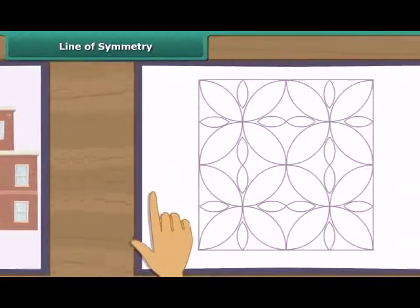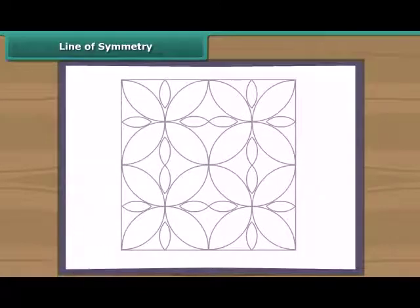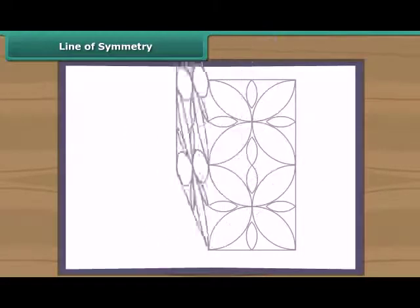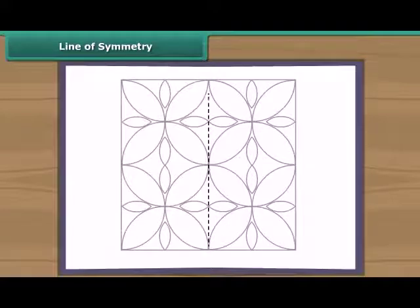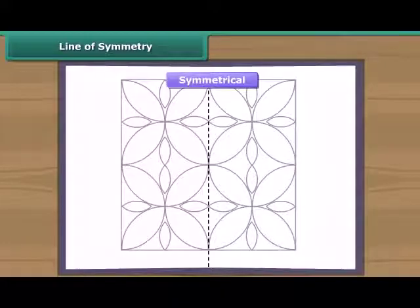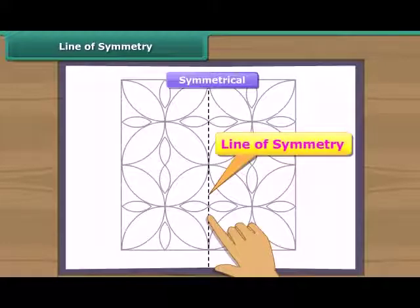Let's take this figure now. When we fold this figure from the center, we will see that the two parts of this figure are coinciding. So we will see that this figure is symmetrical and this line is the line of symmetry.